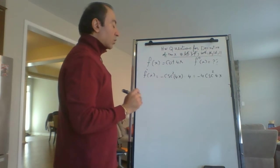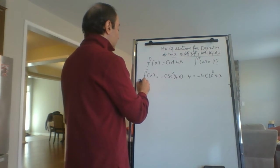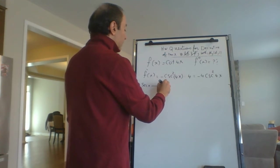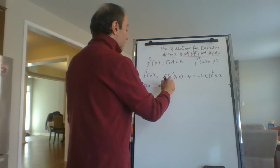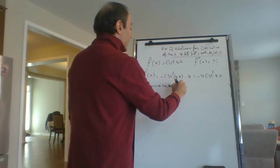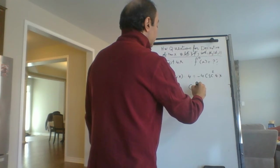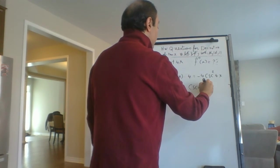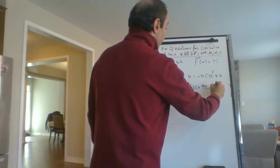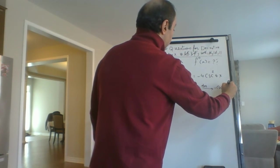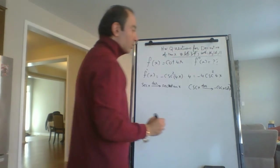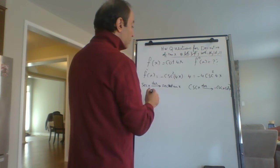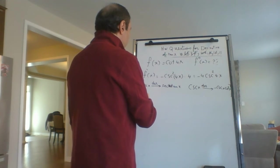From yesterday's homework we learned that the derivative of secant x is secant x tan x, and the derivative of cosecant x is negative cosecant x cot x. We covered this in yesterday's homework — watch yesterday's video and you'll find it. I will use this rule to find the second derivative.